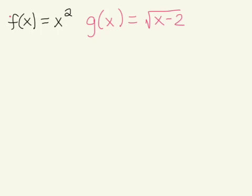In this problem, what we're doing is finding all types of compositional functions and their domains. So the first thing we want to do is identify what's the domain of both of these functions. For f(x) = x², that's quadratic — we know it's a polynomial. The domain of all polynomials is negative infinity to positive infinity. No gaps, no holes, no breaks in your graph.